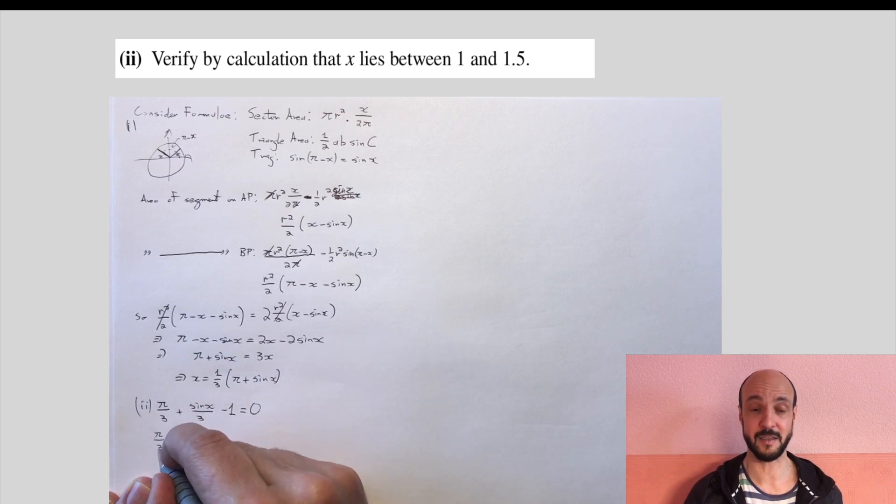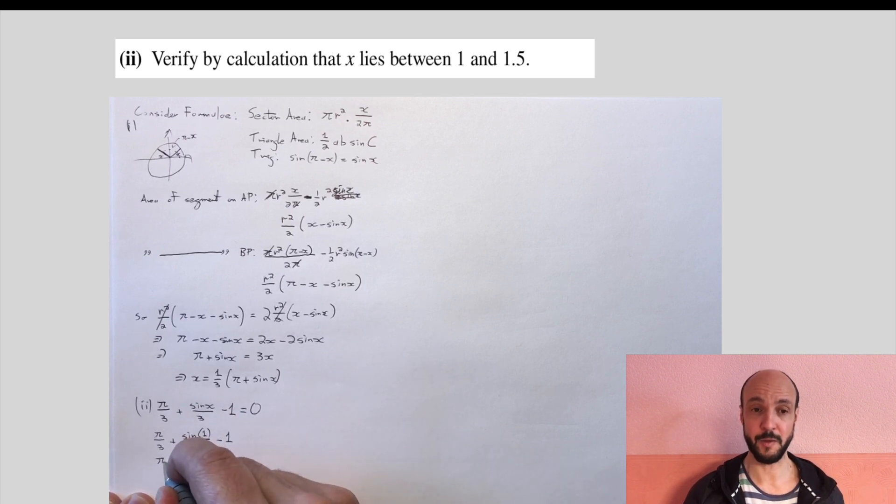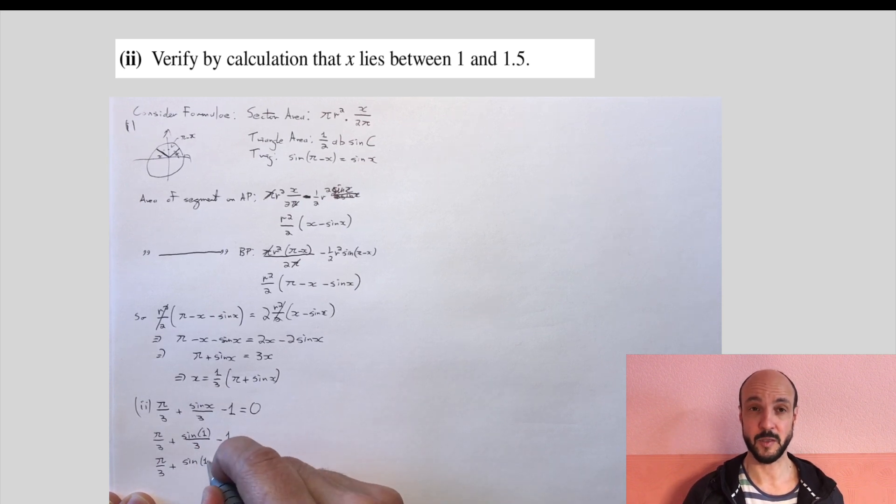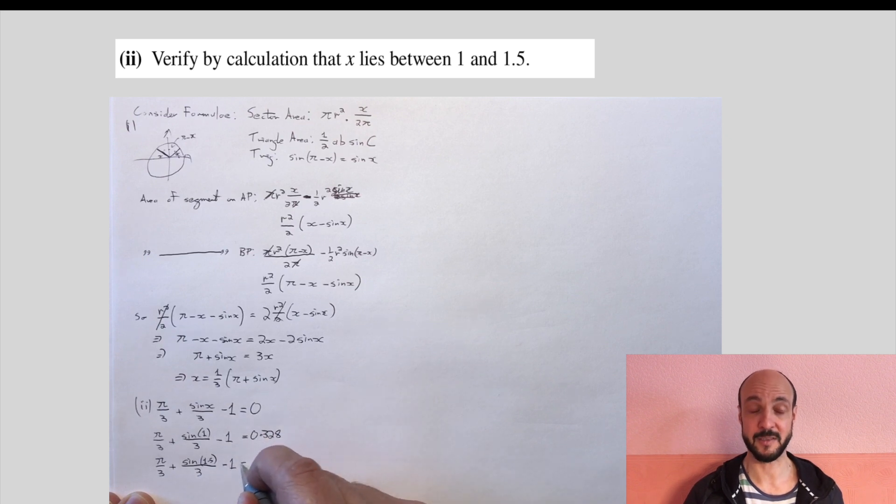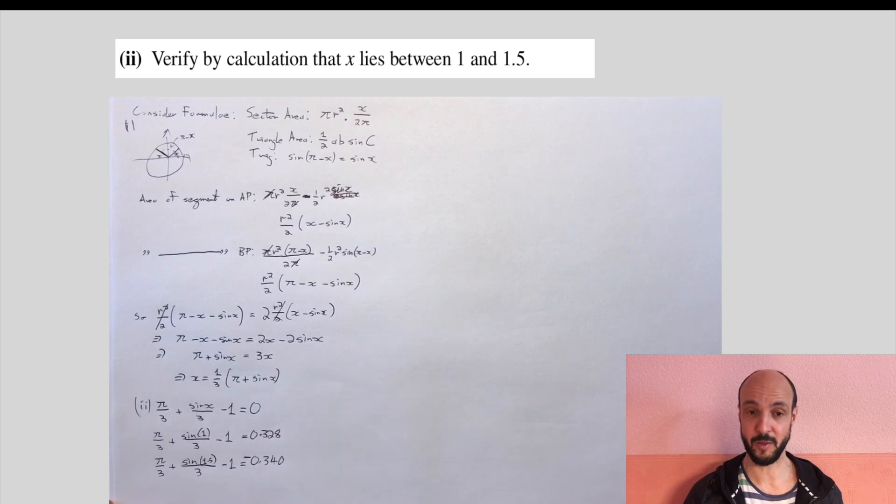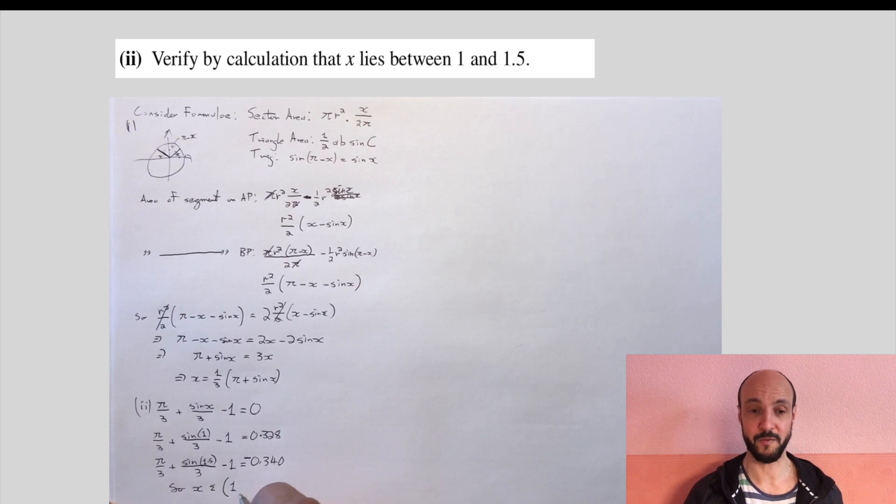This tells us that the solution, the correct value of x, is somewhere between 1 and 1.5. So if we put 1 in, pi over 3 plus sine of 1 divided by 3 minus 1 is equal to 0.328. I'm giving that to three significant figures, which is the typical Cambridge International A Levels requirement. And pi over 3 plus sine of 1.5 over 3 minus 1 is equal to minus 0.340. So as 1 is positive and the other is negative, we know that x belongs to the interval from 1 to 1.5.